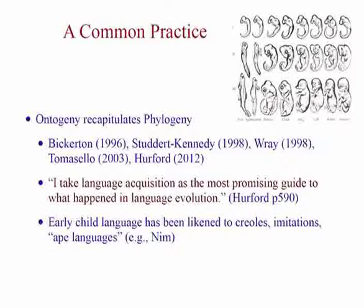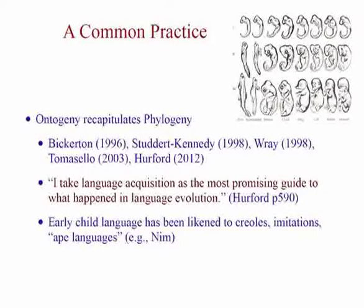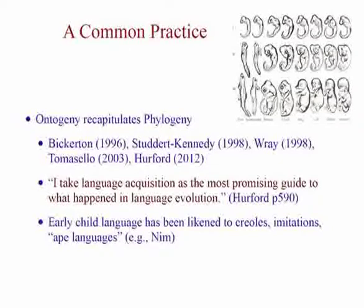This is a very common practice: the idea of ontogeny recapitulating phylogeny — a phenomenology-based idea of biology that has been used in many forms over centuries. It's also one of the more popular approaches in the gradualistic approach to language evolution. I've cited some important figures here, including Jim, who said he takes language evolution as the most promising guide to what happened in language evolution. I would agree with that, though I wouldn't say it's the only promising guide.